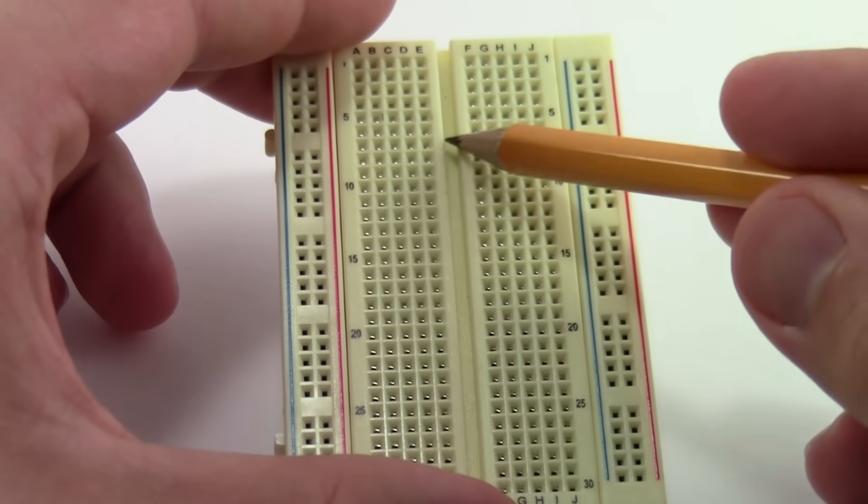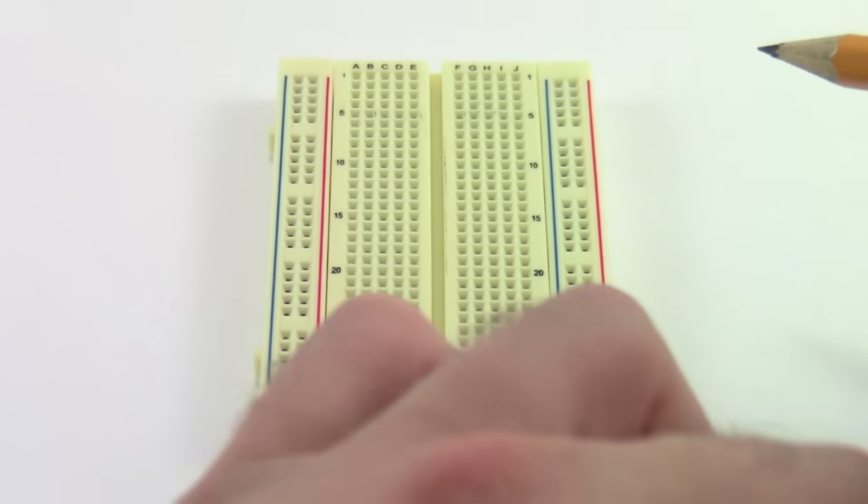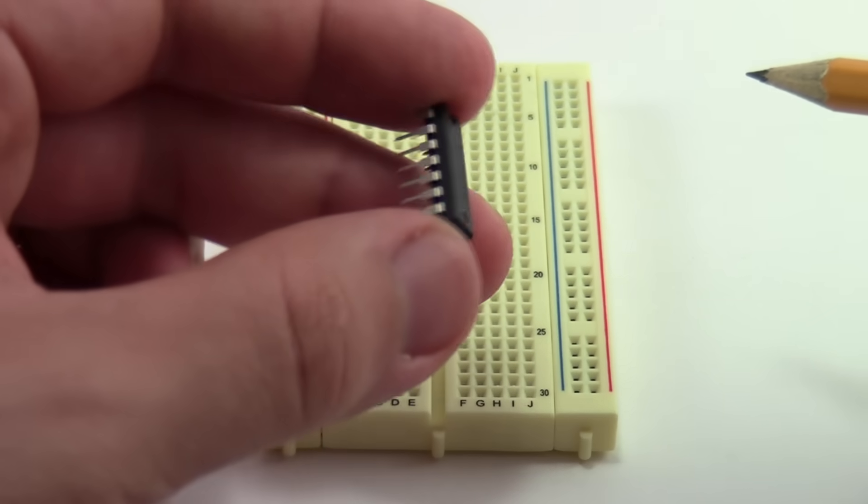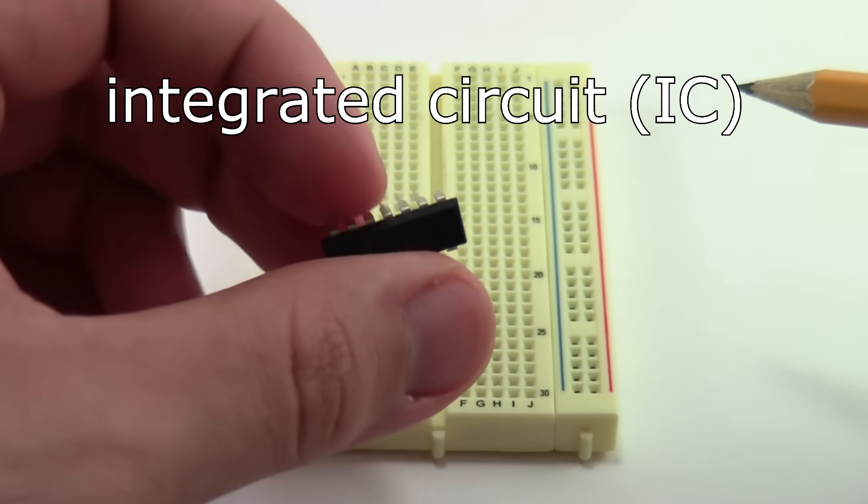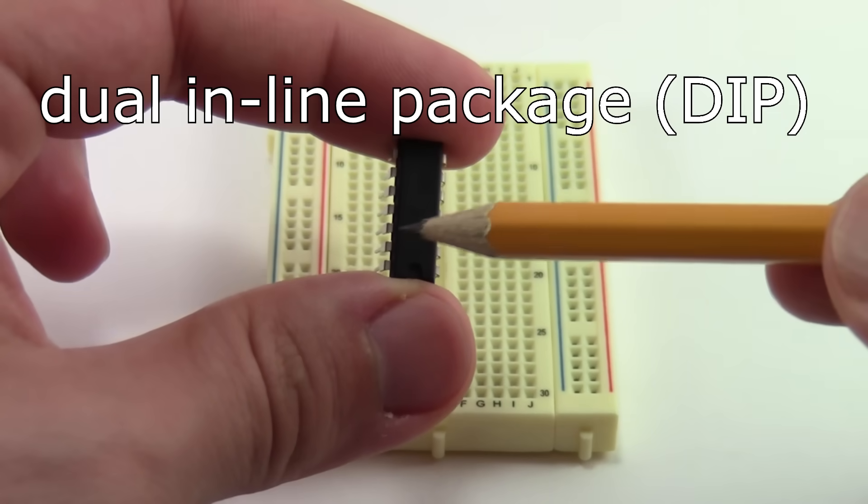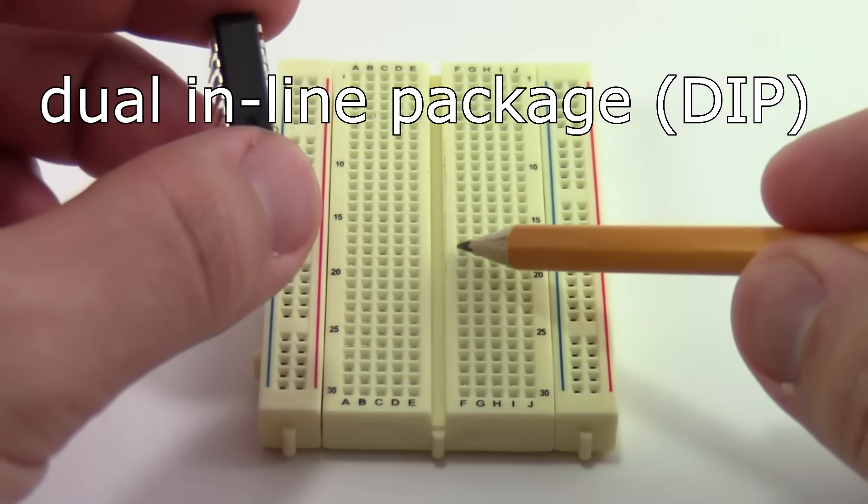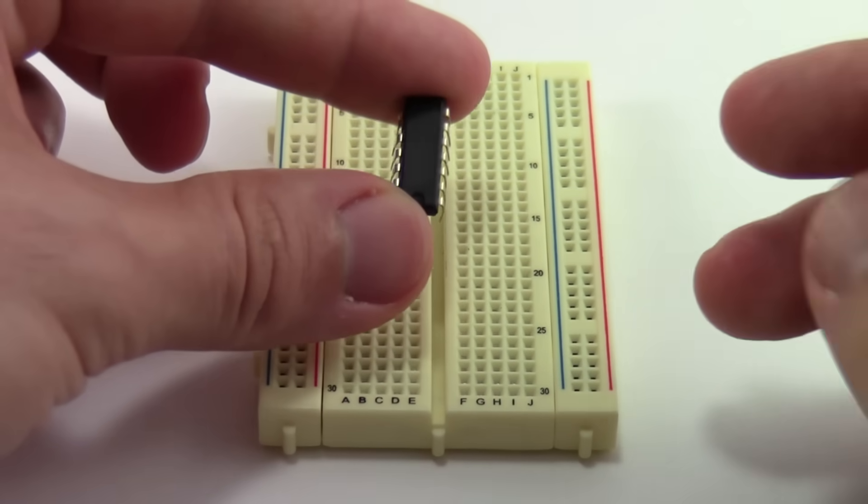Finally, all this time you might have been wondering what this gap that goes down the middle of the breadboard is for. This gap is designed such that integrated circuits, sometimes just called chips, that come in a dual inline package, meaning they have two rows of pins, can fit nicely straddling the middle of the breadboard.